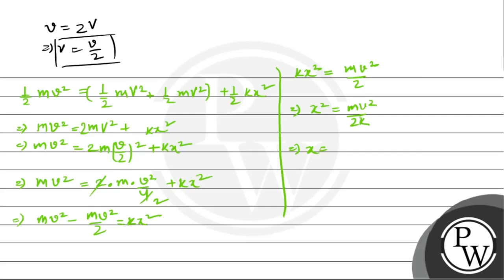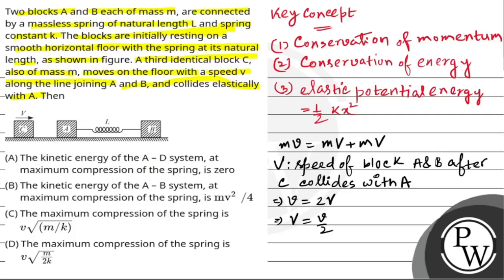So the maximum compression is v times √(m/2k), which matches option D. So option D is correct.